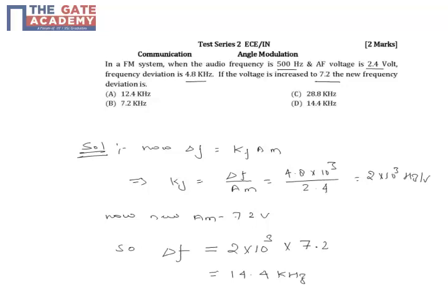In this question we have an FM system, a frequency modulated system. It is given that the audio frequency is 500 hertz and the amplitude of the voltage is 2.4 volt, and we are getting a frequency deviation of 4.8 kilohertz. Now the question says if the voltage is increased to 7.2 volt, the new frequency deviation is going to be what?